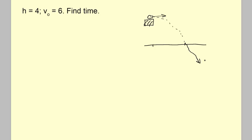What is the final velocity? That's the sort of thing we'll be looking at. This comes from the simulation — a basic problem where the projectile is 4 meters above the plane and the initial velocity is 6 m/s. How long will it be before it hits the ground?